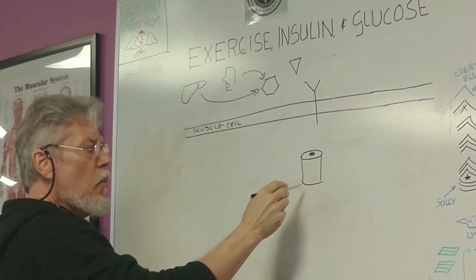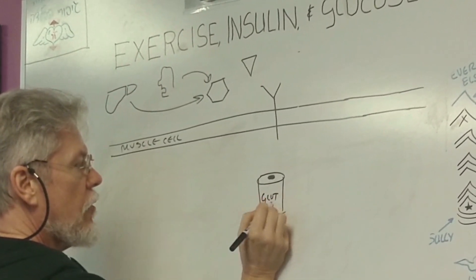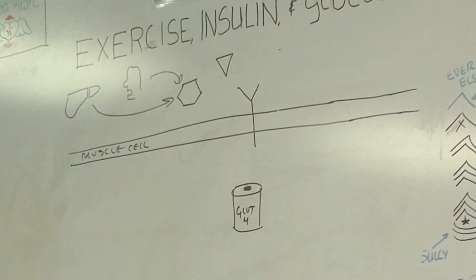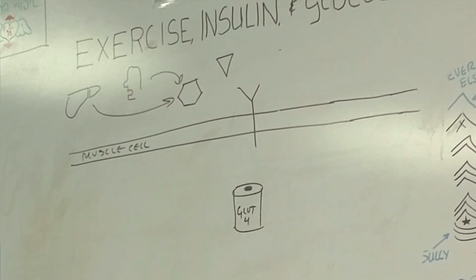In the muscle cell, we have something called glucose transporters. They're technically called GLUT4 molecules. They're a special protein that will allow glucose to get into the cell. But before that happens, there needs to be some sort of signal sent to the GLUT4 molecule.